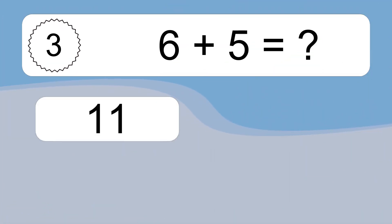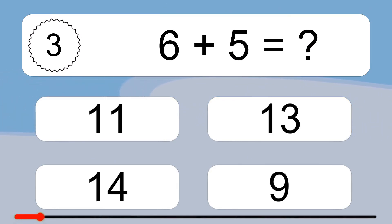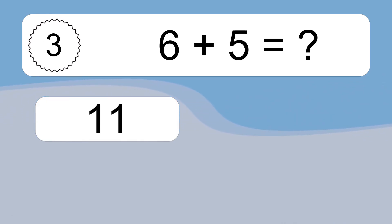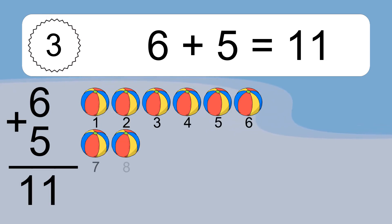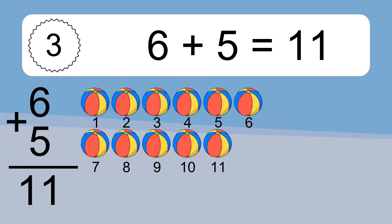6 plus 5 equals what? 6 plus 5 equals 11. Let's count it: 1, 2, 3, 4, 5, 6, 7, 8, 9, 10, 11.